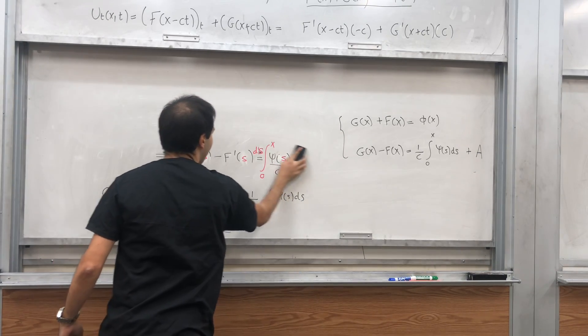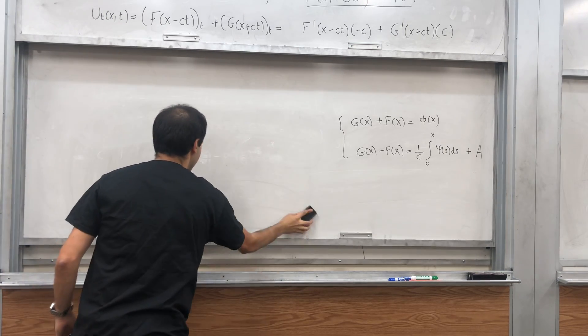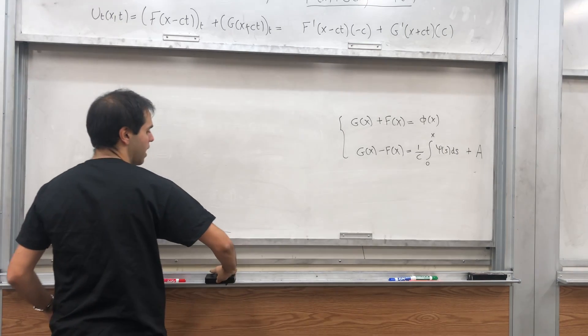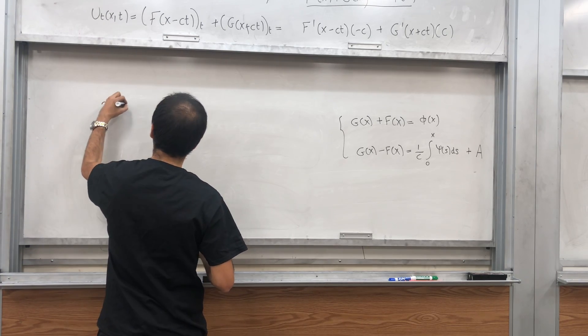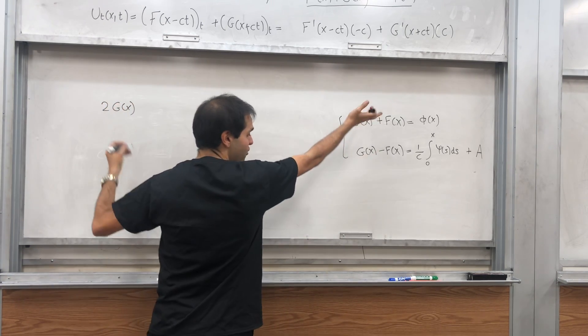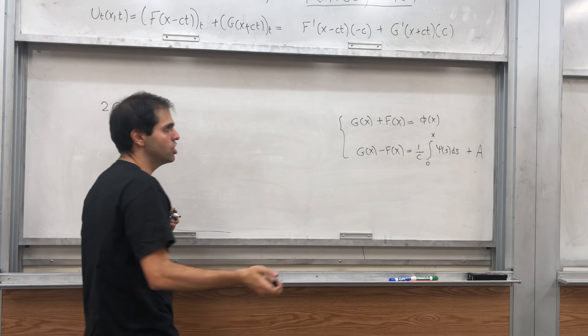Therefore, if you add the equations, what do you get? Well, if you add that, you get G of x plus G of x, so 2G of x, plus F of x minus F of x, which is zero.